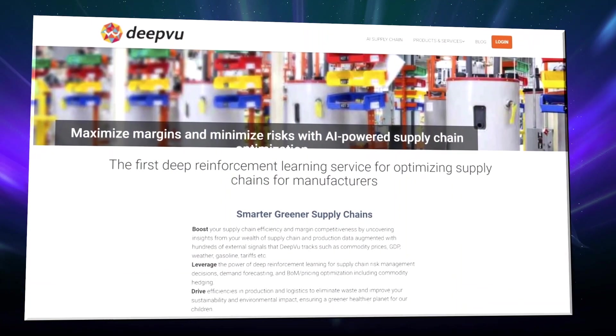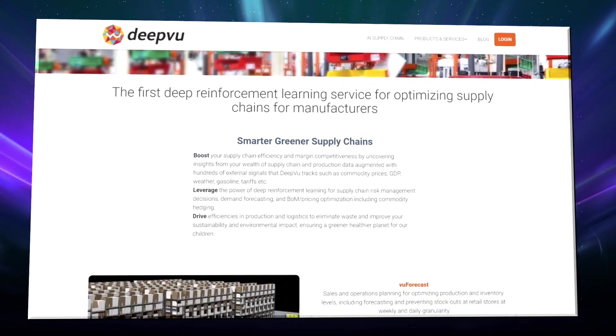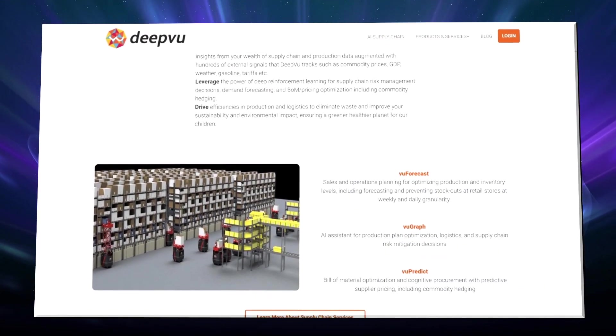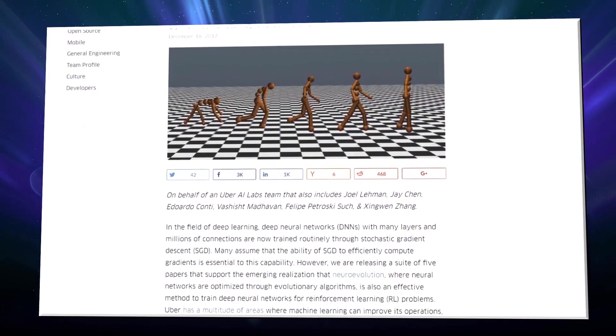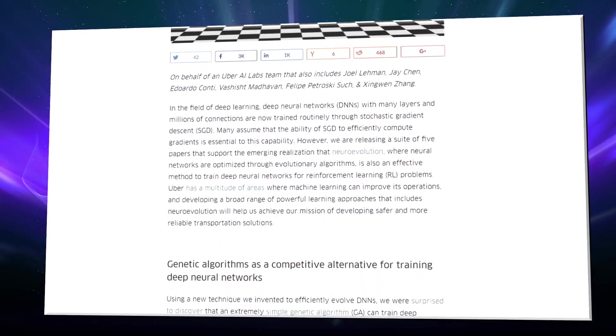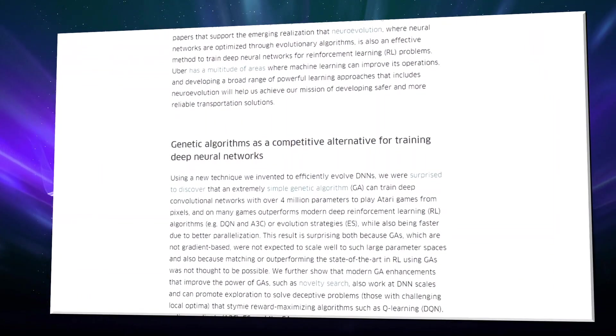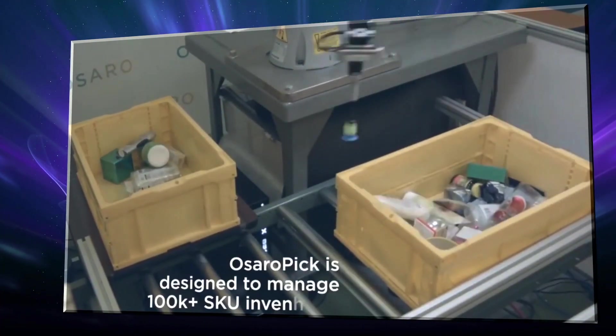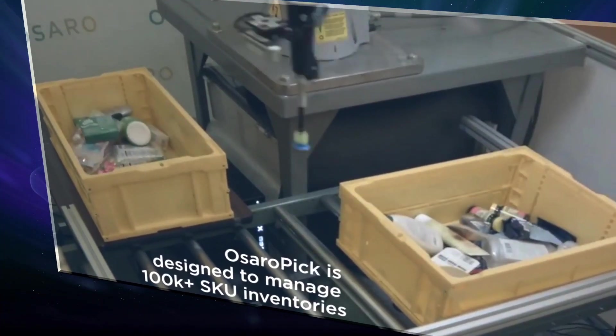DeepVu is using it to address the challenges of managing complex enterprise supply chains. Uber has applied it at massive scale to be able to more efficiently match riders and drivers together. And Osaro is using it to create some of the smartest factory robots ever made.